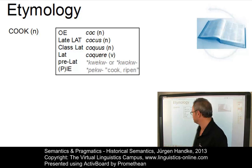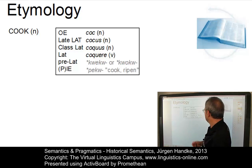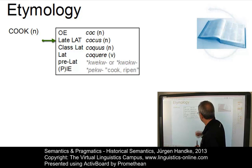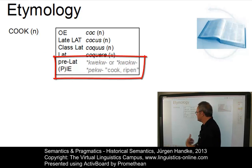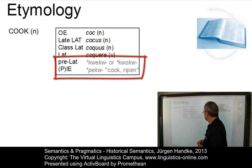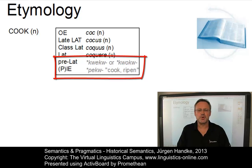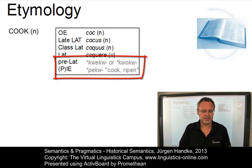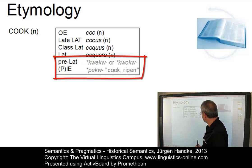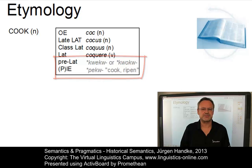The sources recorded for 'cook' are from Old English 'cook', late Latin 'cocus', classical Latin 'cocus', and in Latin generally there is a verb 'coquere'. And then we have sources from phases prior to Latin, such as 'cocu', and from Proto-Indo-European 'pecu', which means 'cook' or 'ripen'. Note that the last two sources involve so-called proto-words — words that had to be reconstructed because no written or spoken evidence can be found for them. Reconstructed words are normally marked with an asterisk in historical linguistics.